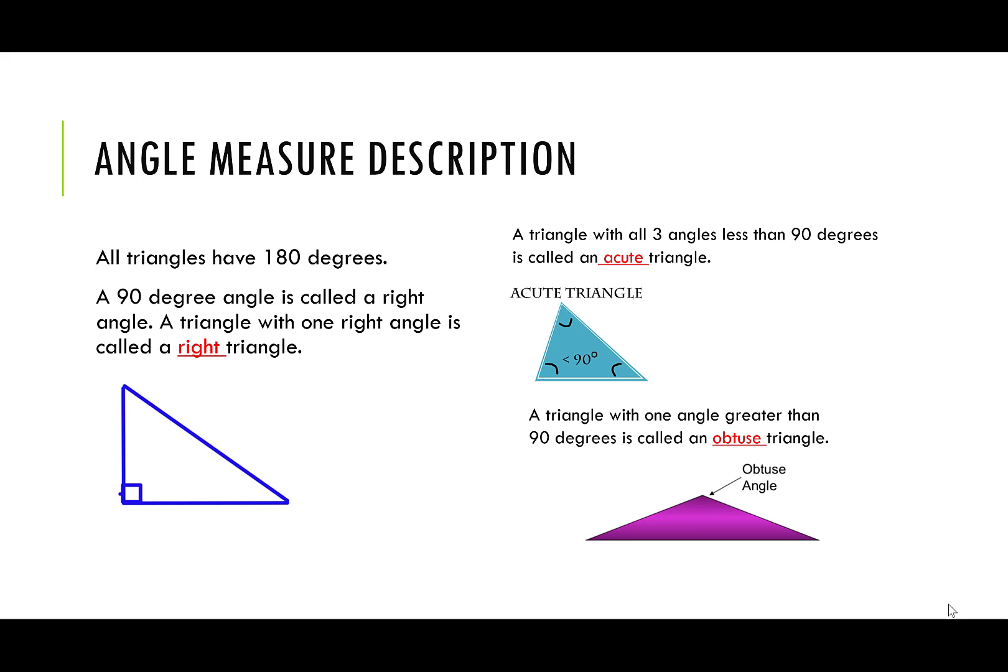All triangles have 180 degrees. A 90 degree angle is called a right angle. A triangle with one right angle is called a right triangle.